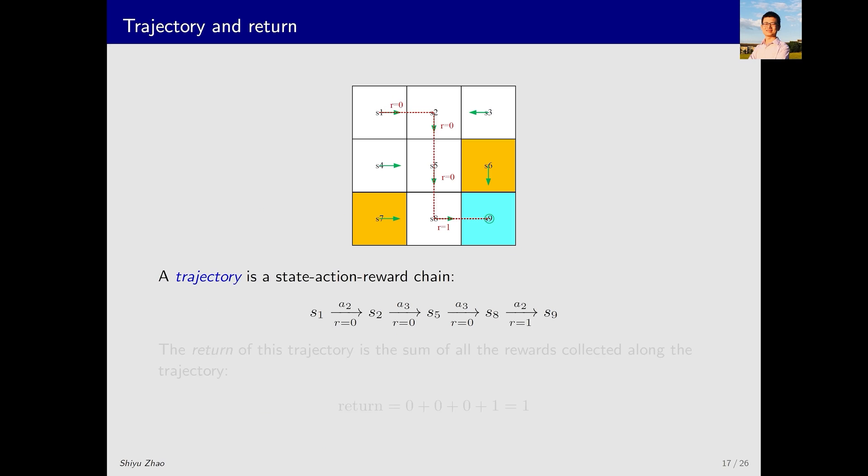The next concept is called trajectory. What is a trajectory? It is a chain of state action reward. Specifically, consider this example. The initial state is S1. Then I take action A2 and receive a reward of 0, leading me to state S2. Continuing to take action A3, I receive another reward of 0. This process goes on until I finally arrive at S9. Such a chain is referred to as a trajectory. This includes three components: the states, the actions and the rewards.